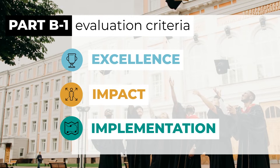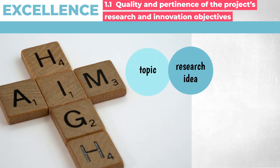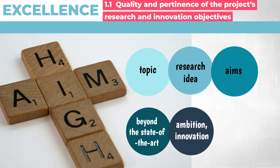Within the Excellence criterion, the following areas should be reflected. Start by formulating a short introduction to your topic, then formulate the main research idea and define specific objectives or research questions, reflecting how you intend to proceed. Describe the features where your project goes beyond the state of the art and justify why it is innovative and ambitious.